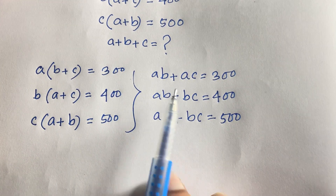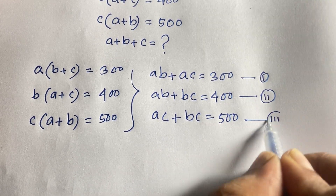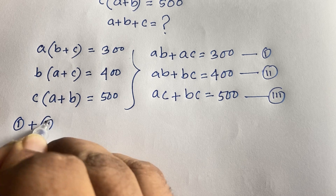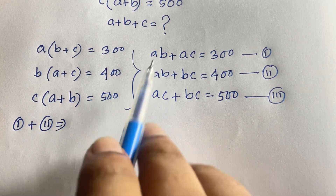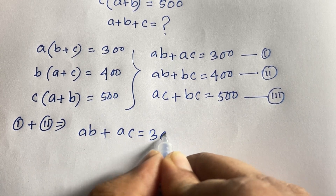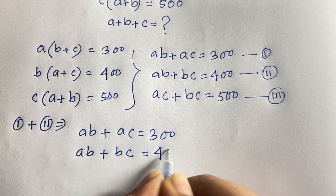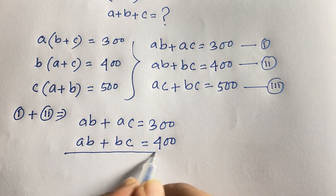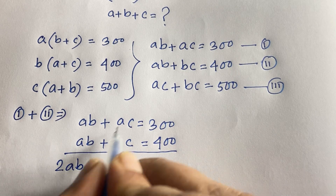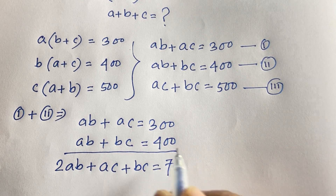We now have three expanded equations. Adding the first equation and the second equation: ab plus ac equals 300, plus ab plus bc equals 400. Adding both equations gives us 2ab plus ac plus bc equals 700, because 300 plus 400 equals 700.